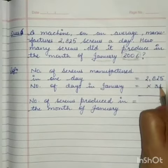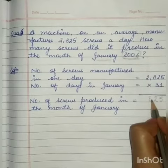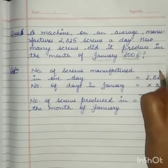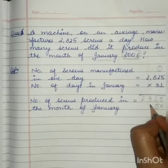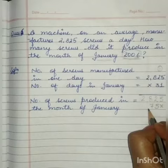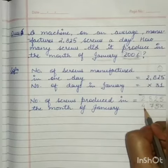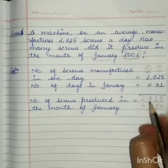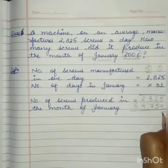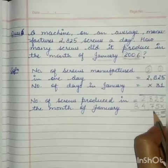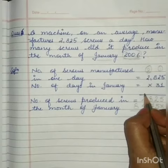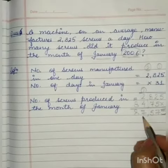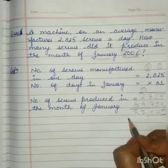1 times 5 is 5. 1 times 2 is 2. 1 times 8 is 8. 1 times 2 is 2. Now, with 3: 3 fives are 15, 1 carry. 2 times 3 is 6, plus 1 is 7. 3 times 8 is 24, 2 carry. 3 times 2 is 6. Then 7 and 8 gives 5, carry 1. That is 15, again 1 carry. 7 and this is 8. So, this is 87,575 screws.